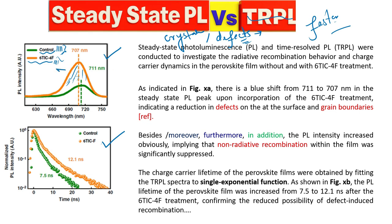Secondly, there is a shift toward the lower wavelength — this is what we call a blue shift. We know the important relation: E = hν, or we can say E = hc/λ. So from this equation, when the wavelength is decreasing, the energy or the bandgap basically increases. This means we can find the bandgap of the material, which increases when we add this to the film. This blue shift also gives us the information that defects basically decrease in the film.